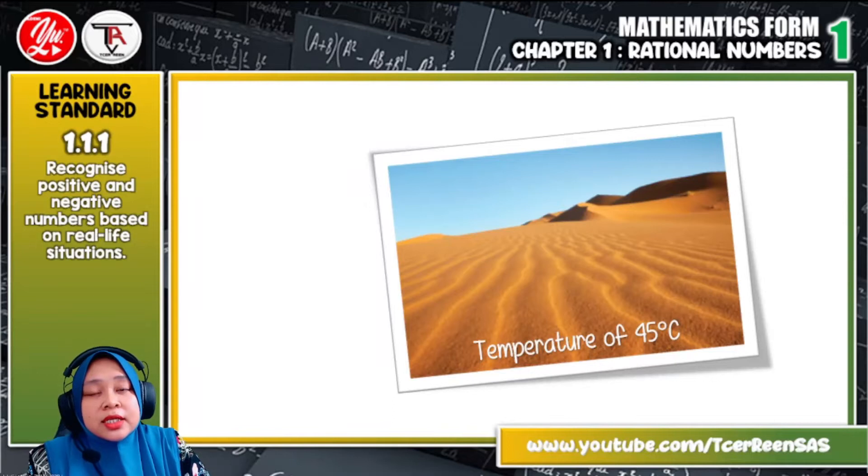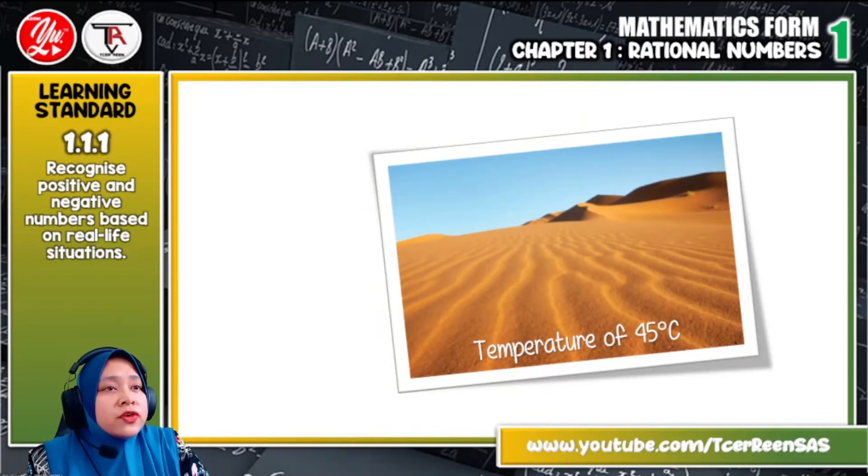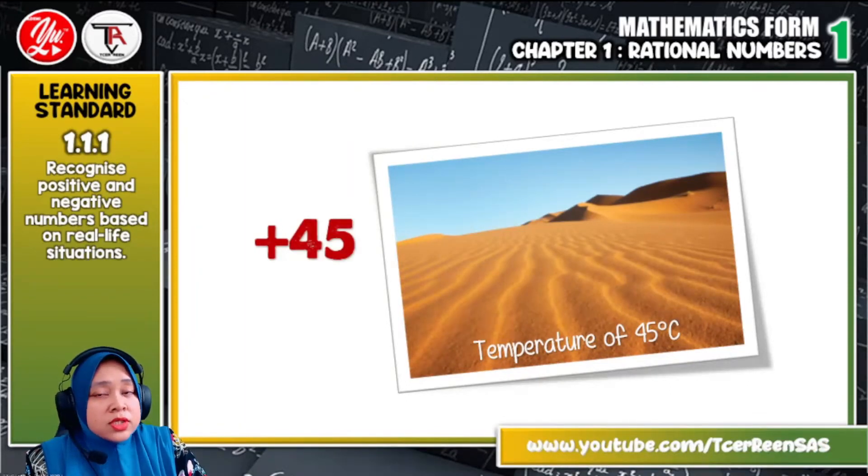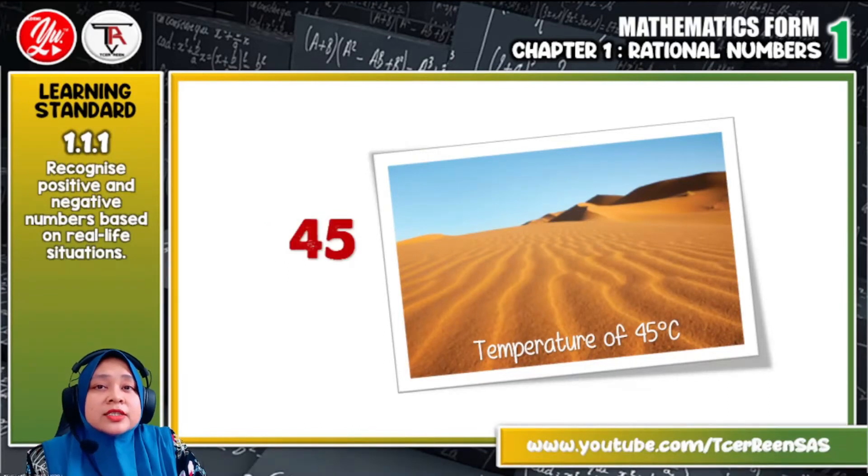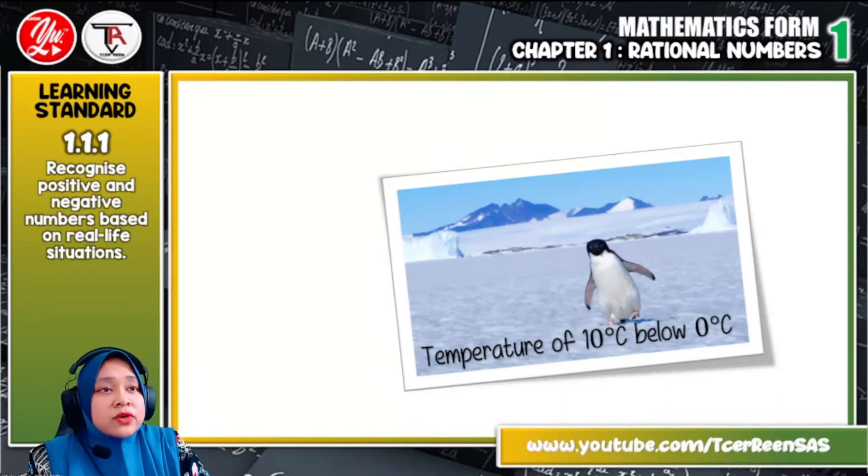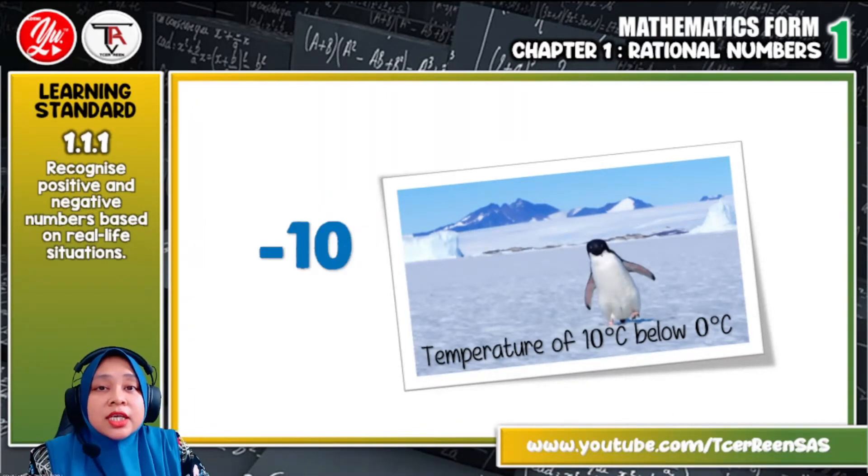Okay, how about this? It is a desert. Desert temperature have the temperature of 45 degrees Celsius. So it is above 0 degrees Celsius. So how to write it is just write it as plus 45 or just put it as 45 without any plus sign. Okay, how about the temperature of a glacier? Temperature of a glacier is usually below 0 degrees. For example, here, temperature of 10 degrees Celsius below 0 degrees Celsius. So how to write it? We just write it as negative 10.